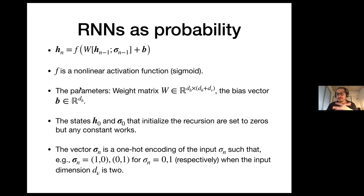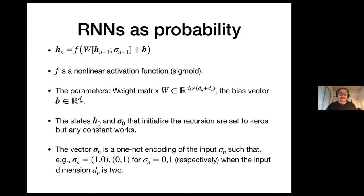The parameters of the RNN are: a weight matrix W with dimensions DH times (DH plus DV), where DH is the dimension of the hidden vector and DV (nu) is the dimension of the input. The bias vector is in R^DH. We use this as a recurrence: going from a given vector H_{N-1} to H_N. We initialize H_0 and sigma_0 to zeros. The sigma in bold is a one-hot encoding — for a spin zero or one, zero maps to (1,0) and one maps to (0,1).